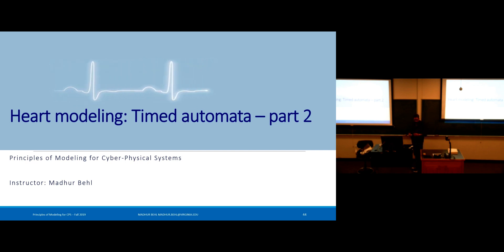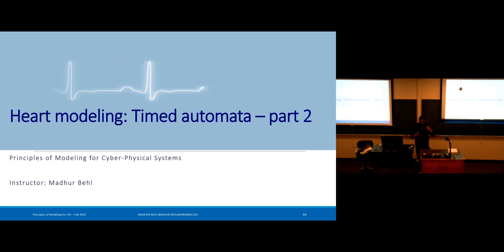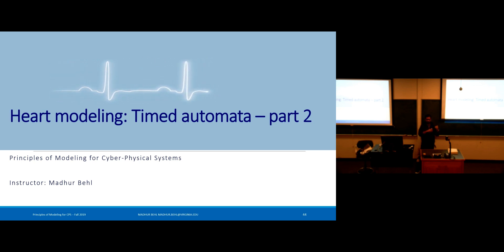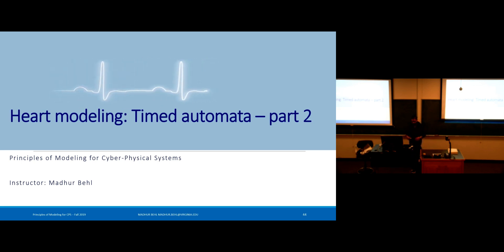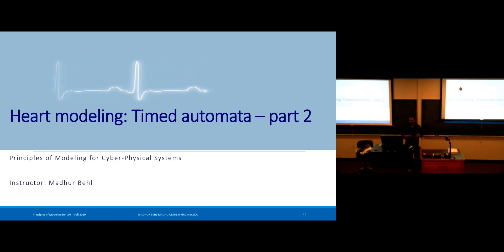We used that piece and really understood what the guards, actions, and messages in that transition were. Where we left our understanding was this notion that we can have a node automaton for the right atrium, for the right ventricle, and then we defined a new type of automaton called the path automaton, which models the conduction properties between the atria and the ventricles.